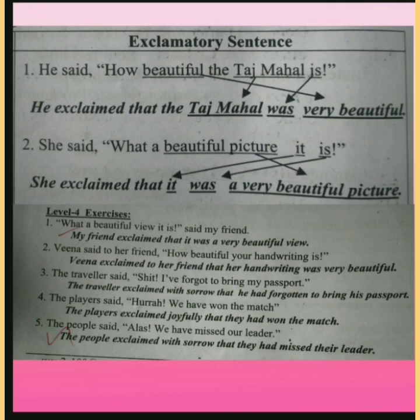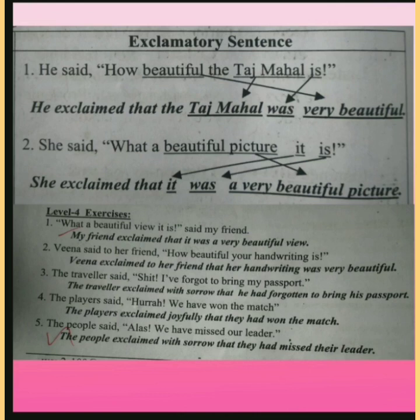Example with present perfect: 'The traveller said, alas, I have forgotten to bring my passport.' 'Alas' indicates sorrow. Indirect speech: 'The traveller exclaimed with sorrow that he had forgotten to bring his passport.' 'Have forgotten' changes to 'had forgotten' — present perfect changes to past perfect. 'My' changes to 'his.' Another example: 'The player said, hurrah, we have won the match.' 'Hurrah' indicates joy. Indirect speech: 'The players exclaimed joyfully that they had won the match.' Present perfect changes to past perfect.